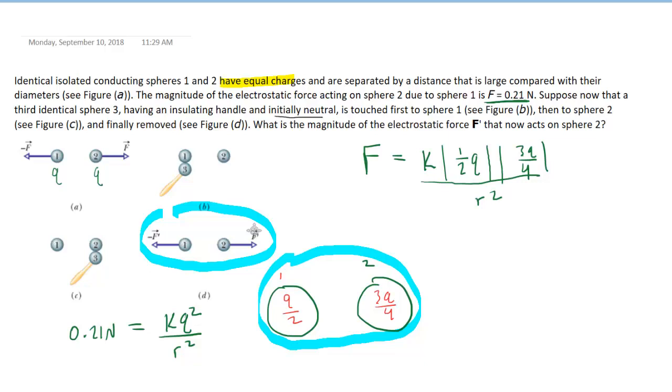Now these fractions that are in front of the Qs, we're going to actually factor them out. So this 1 half and this 3 fourths, that can factor out. We'll put them all the way in the front. So we're going to have 1 half times 3 fourths times K. And then we'll have the absolute value of Q times the absolute value of Q divided by the distance squared.